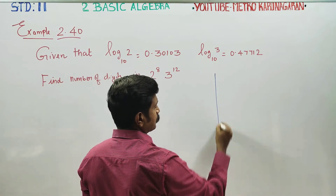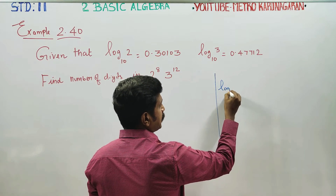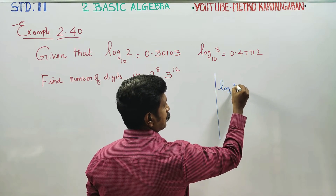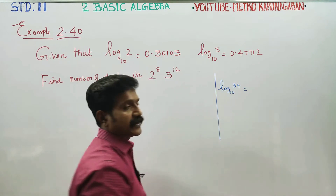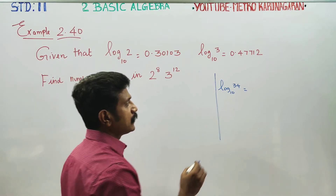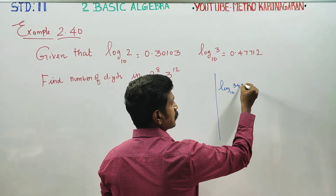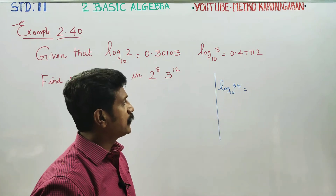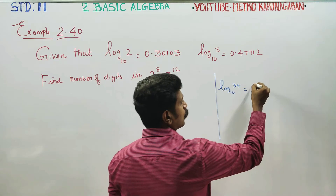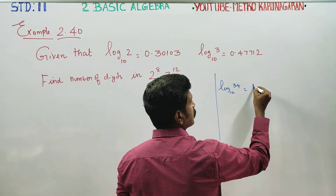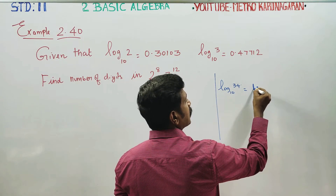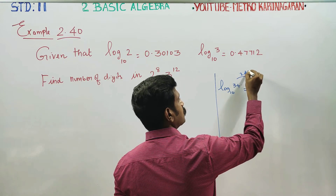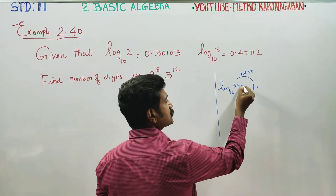A small information: logarithm to the base 10 of 34 — this is the characteristic. Characteristic 1 means here are two digits. Then after the decimal point comes the mantissa part of the logarithm.